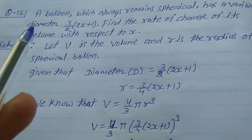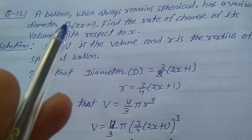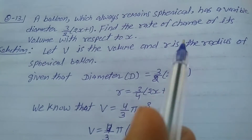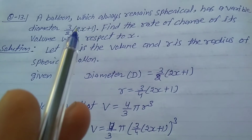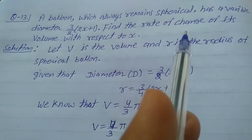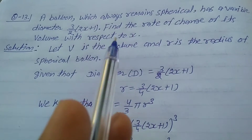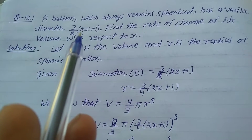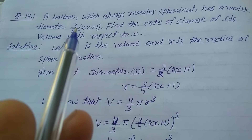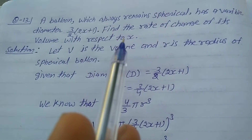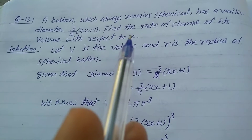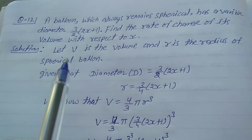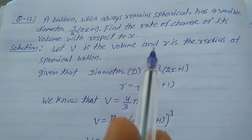Explanation number 13, Exercise 6.1, Class 12th. A balloon which always remains spherical has a variable diameter 3/2 × (2x + 1). Find the rate of change of its volume with respect to x. The given condition is the diameter formula 3/2 × (2x + 1), and we need to find the volume rate dV/dx. Let V be the volume and r be the radius.